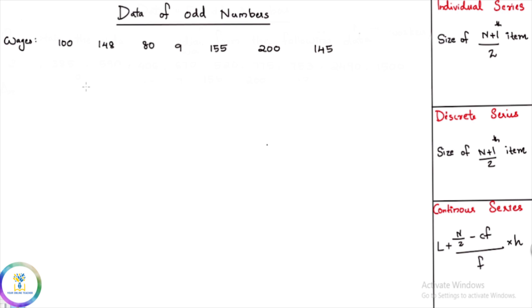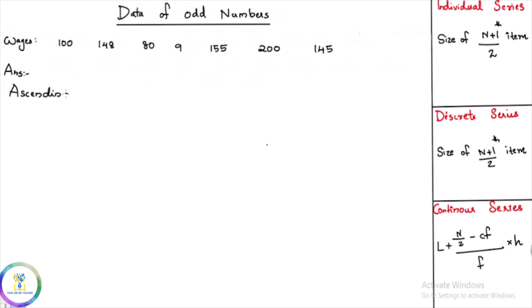Now let's get started with a median calculation example. We have an ascending order. The data is: 80, 90, 100, 145, 148, 155, 200.